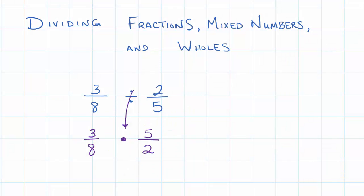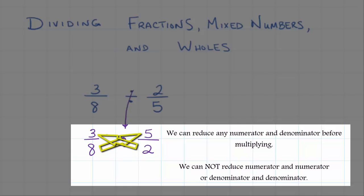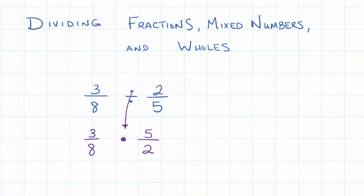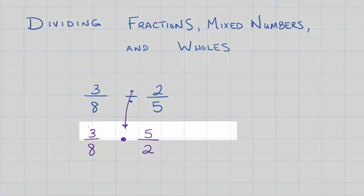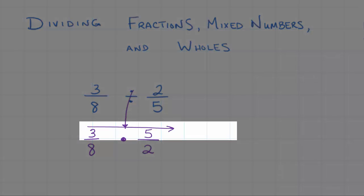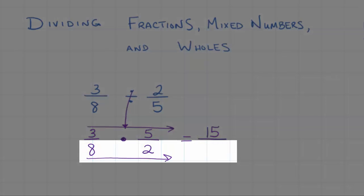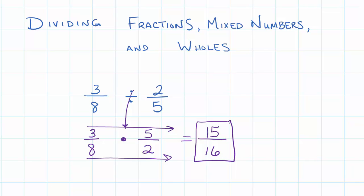Now I can multiply these two fractions together. Before I multiply, I always look top to bottom or bottom to top to see if anything can reduce within the fraction itself, and then I look diagonally. I don't see anything that can divide into both three and two, or five and eight. So I multiply numerator times numerator — 3 times 5 is 15 — and denominator times denominator — 8 times 2 is 16. Since nothing could reduce before multiplying, I have a completely reduced answer of fifteen-sixteenths.